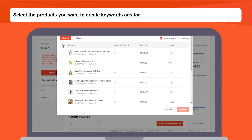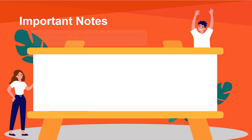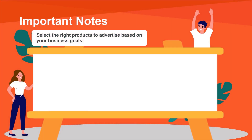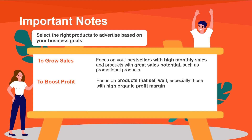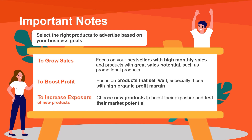Select the products you want to create keyword ads for. It is important to select the right products to advertise based on your business goals. To grow sales, focus on your best sellers with high monthly sales and products with great sales potential, such as promotional products. To boost profit, focus on products that sell well, especially those with high organic profit margin. To increase exposure of new products, choose new products to boost their exposure and test their market potential.